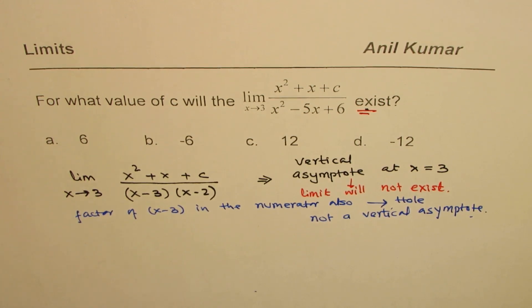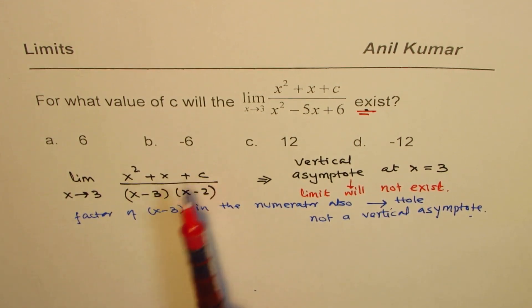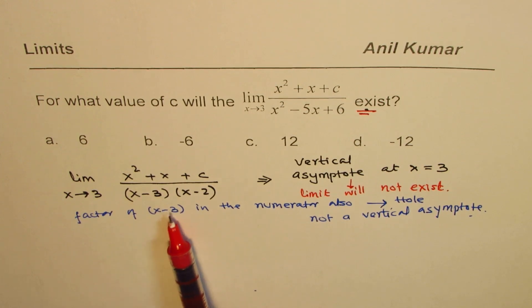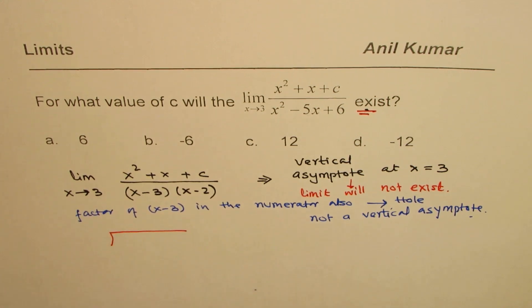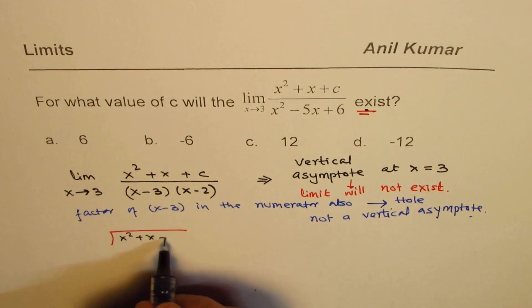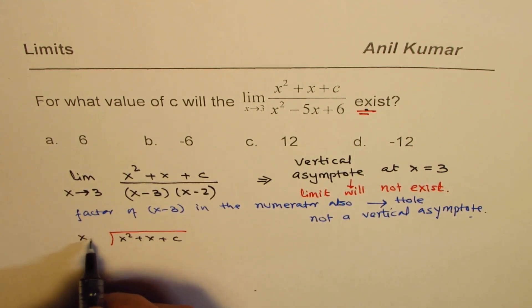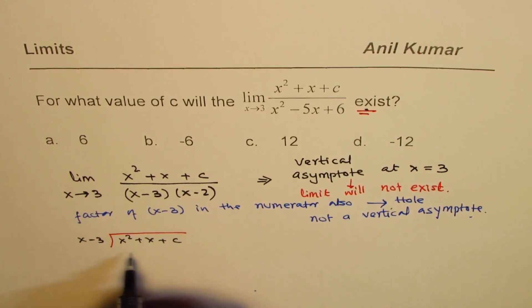Now, the second step is how to find the value of c, knowing that x minus 3 should be a factor of this. The idea is we can do long division or we can divide x squared plus x plus c with x minus 3. Since we want this to be the factor, the remainder should be 0.